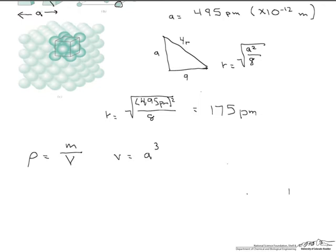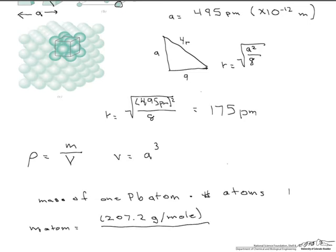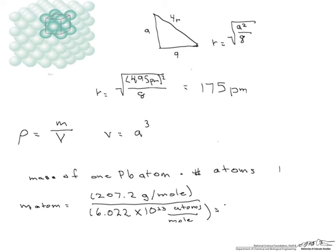To find the mass in our unit cell, we first have to find the mass of one lead atom, and then multiply it by the number of atoms in our unit cell. So the mass of one atom is the molar mass of lead, 207.2 grams per mole of atoms, divided by Avogadro's number, 6.022 times 10 to the 23 atoms per mole. And what we're left with is 3.4 times 10 to the minus 22 grams per atom of lead.